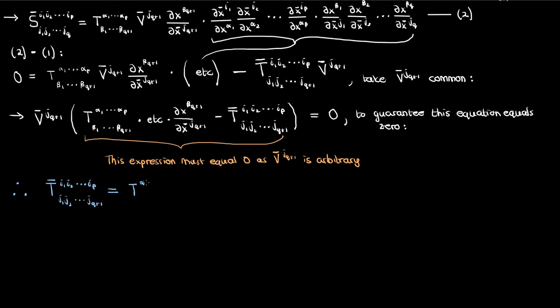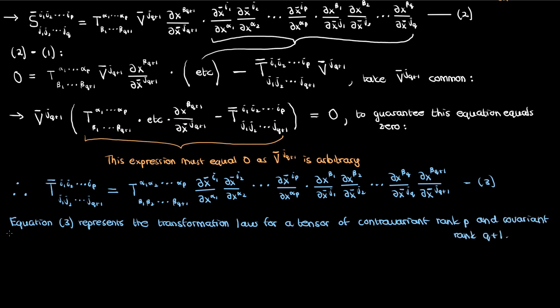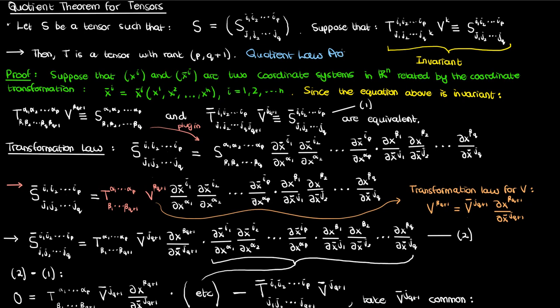And if the term in the parentheses equals 0, then the barred component of T is related to the unbarred component of T by this following equation. And if you recall the definition of tensor transformation laws, this equation just represents the transformation law for a tensor of contravariant rank P and covariant rank Q plus 1. So therefore we can conclude that T is a tensor of rank P comma Q plus 1 because it follows the corresponding transformation law. And this completes the proof of the quotient law.